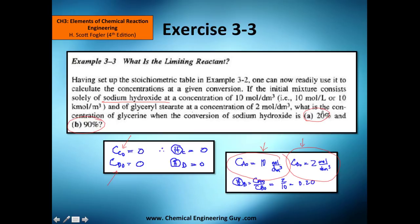Why 0? Because they tell you that it consists solely of this and this, so by definition they are 0. So calculate the theta function of B, which is initial concentration of B divided by A. We got this is 2 from here, this is 2, and this is 10. So we got this 0.2.